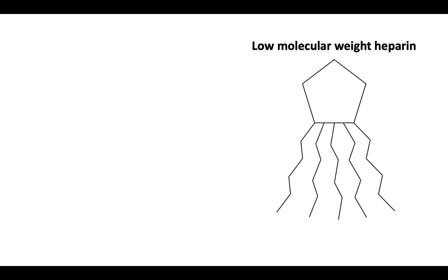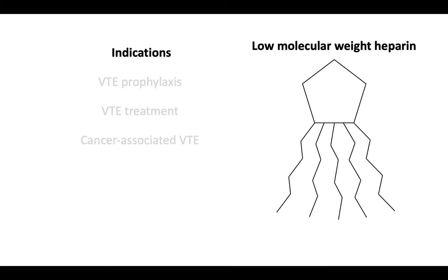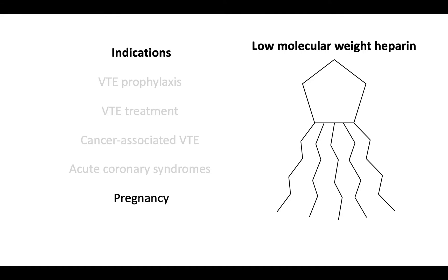Low molecular weight heparin indications include venous thromboembolism prophylaxis and treatment. They are effective in the management of cancer-associated thrombosis and are also indicated in acute coronary syndromes. They are the preferred anticoagulant for thrombosis management in pregnancy, because they do not cross the placenta.